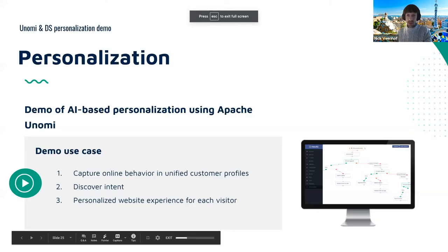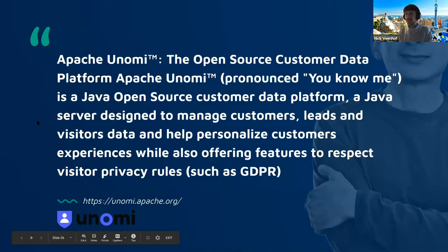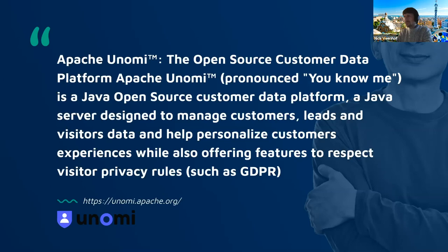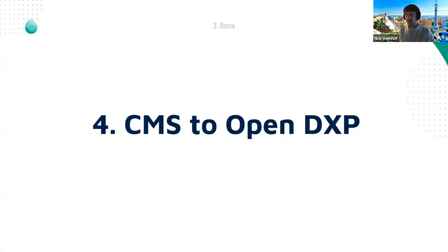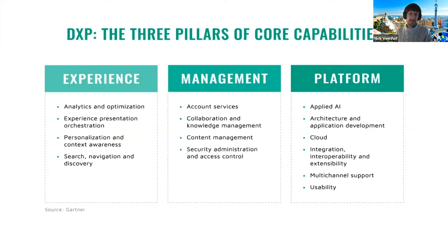As a recap, Apache Unomi is used here as a Customer Data Platform — a CDP. It's designed exactly for this use case. We no longer have a single global audience — we have different website variations and different emails based on the audience that came in. So how do you go from a simple Drupal site to this fully connected setup with its different components?